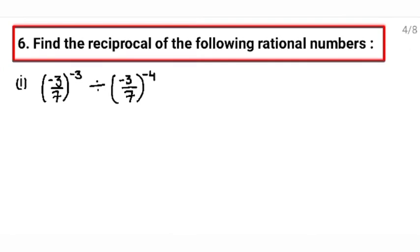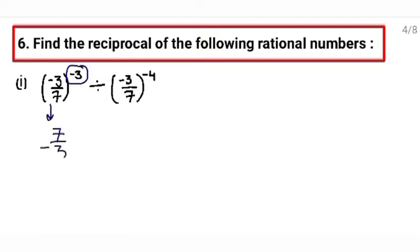Next, question number 6: find the reciprocal of the following rational numbers. Before finding the reciprocal, firstly you will evaluate it. The power is negative, so firstly we will make its power positive. To make it positive, write the reciprocal of the base. Its reciprocal will be 7 upon minus 3, raised to the power 3 — now the power will be positive. Here again, to make its exponent positive, you will write the reciprocal of the base. Reciprocal of minus 3 upon 7 will be 7 upon minus 3, and the power will be positive now.